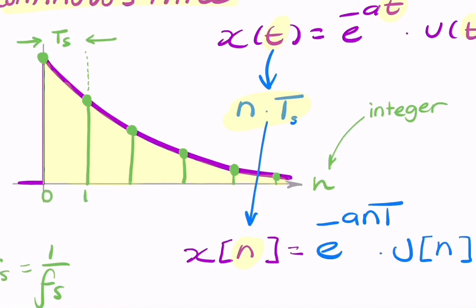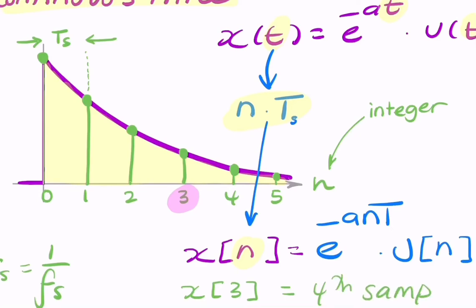So here n equals 0, 1, 2, 3, 4, 5. For example, when n equals 3, that means that we have 3 times the sample period. That doesn't mean that time is 3. So if I were to say x of 3, that means the fourth sample — the sample when n equals 3. So this is the first sample, second sample, third sample, and fourth sample. The fourth sample is x of 3.